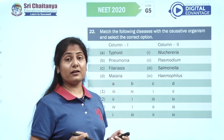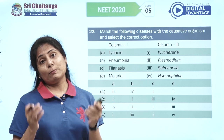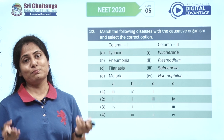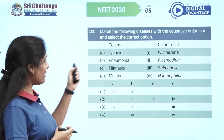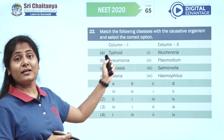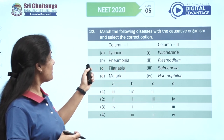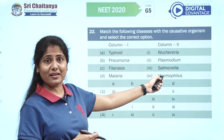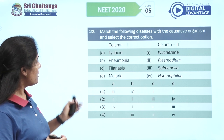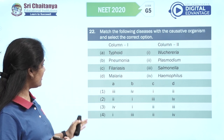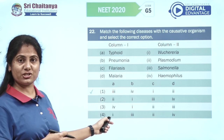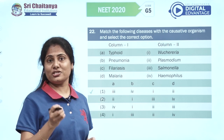Match the following causative agents — a question given most of the time in board exams also. Typhoid is caused by Salmonella typhi; pneumonia by Haemophilus influenzae; filariasis by Wuchereria bancrofti; and malaria is caused by Plasmodium. Typhoid matching with Salmonella — with just one single match you get the right option, which is option one.